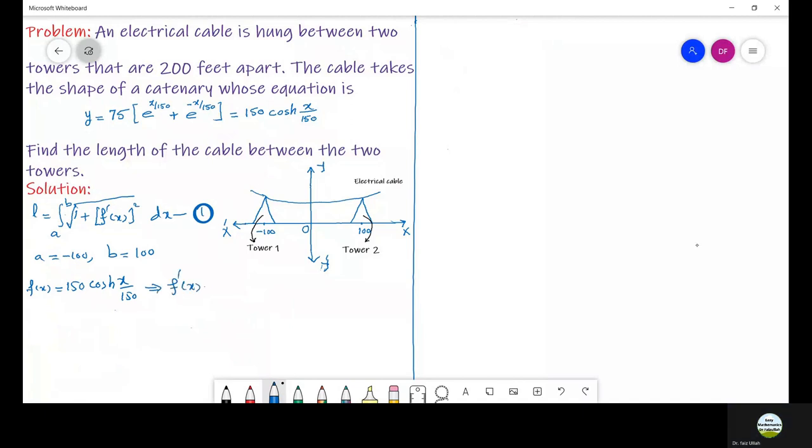So we have f prime of x equals 150 times sinh(x/150) and the inner differentiation of x over 150 is 1 over 150. From this we obtain f prime of x which equals sinh(x/150).